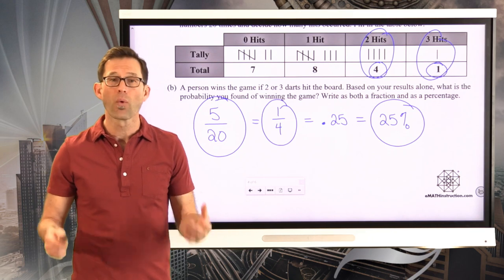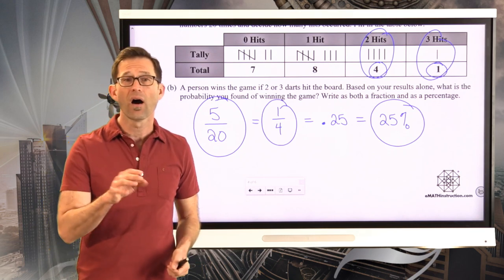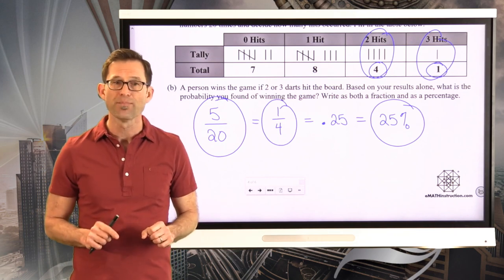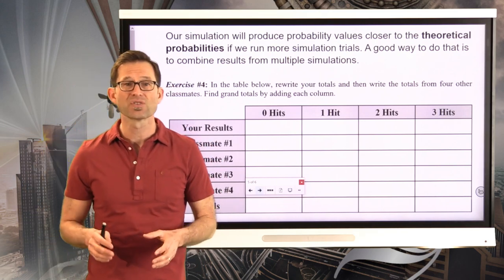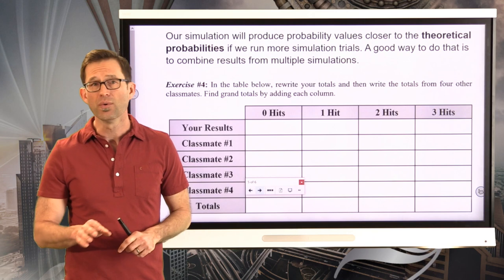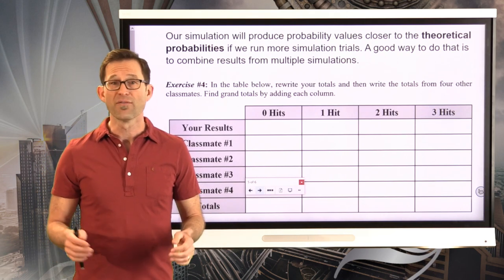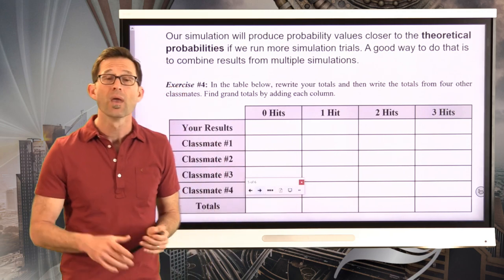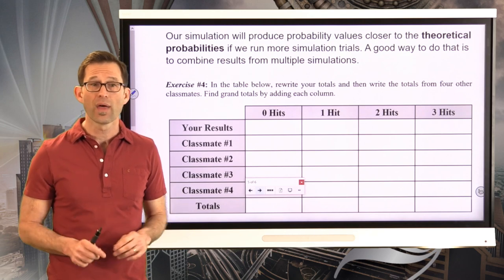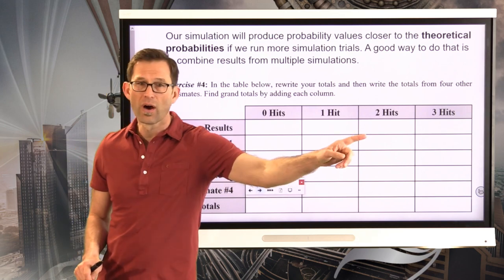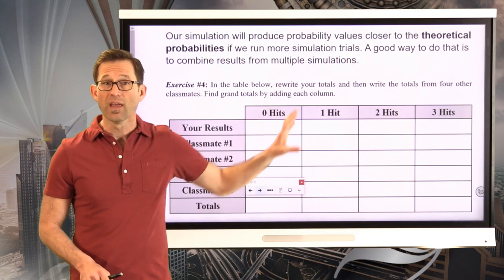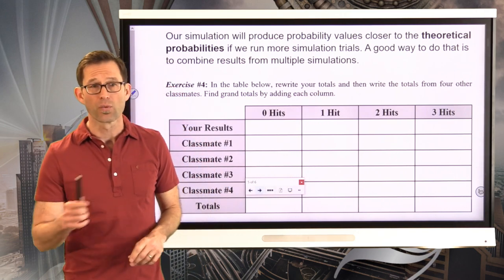Now, one of the things about simulation, though, is the more we do the simulation, if I didn't do it 20 times, if I did it 100 times, or 200 times or 300 times, I would get closer and closer to the true probability of winning this game. So I'm kind of hoping you're doing this in a class with classmates so that you can get your results along with the results of four other classmates. Now, if you're at home right now and you're doing this distance learning, if you've got friends who are also doing it, maybe give them a call and find out what their results are. Send them a text, something like that. If you don't have that going on either, it's just you and you alone, then I would rerun it four additional times.